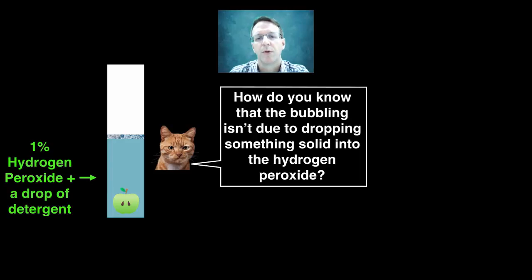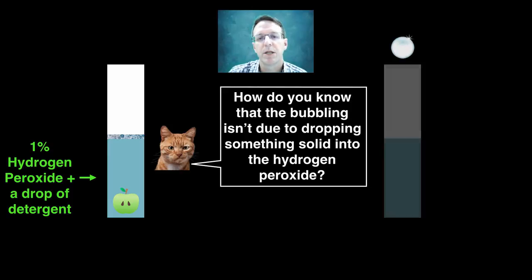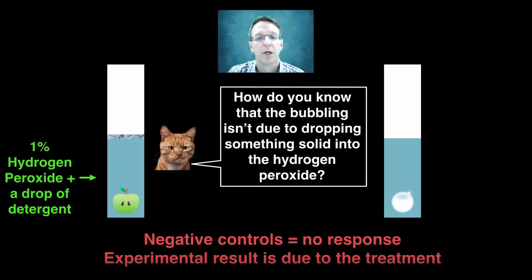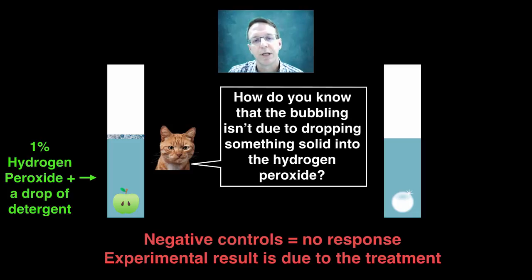How do you know that wasn't from dropping a solid object into the solution? Okay, that's a bit of a stretch, but you need to deal with it. So you repeat the experiment with a glass bead and find no bubbles. This is called a negative control since it's designed to produce no result. And this is used to demonstrate that the experimental result, in this case of a few little bubbles, is due solely to the change in the independent variable. So really, we have already seen this type of control in the fertilizer example earlier.